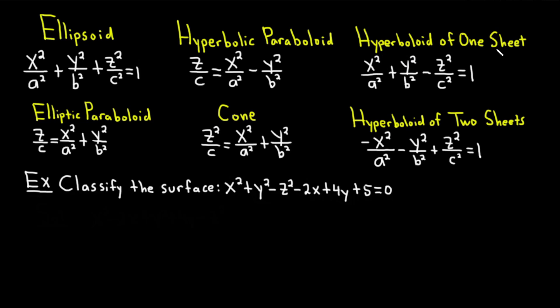The formula for the hyperboloid of one sheet is x squared over a squared plus y squared over b squared minus z squared over c squared equals one.